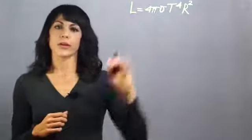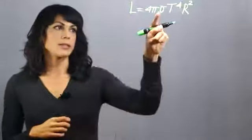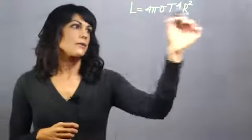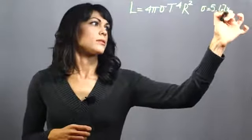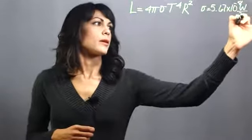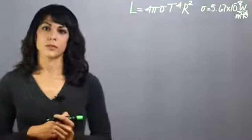So this takes into account the surface area of the star, the Stefan-Boltzmann constant that has a value of 5.67 times 10 to the minus 8 watts per meter squared kelvin to the fourth, and this is the luminosity of the star.